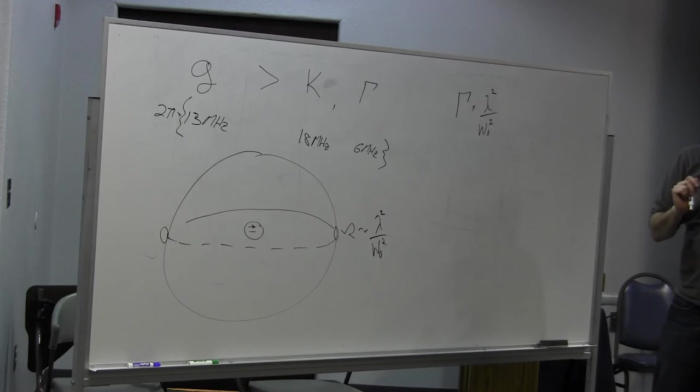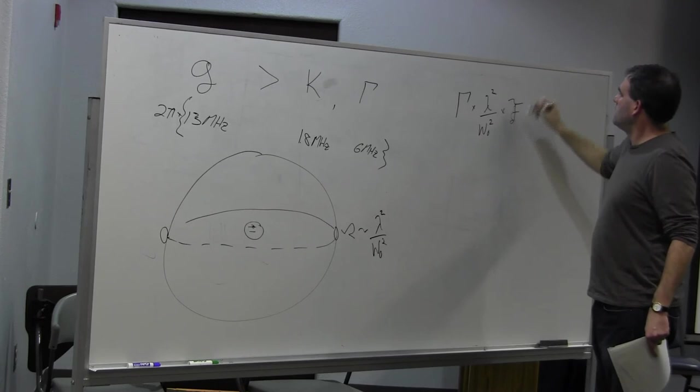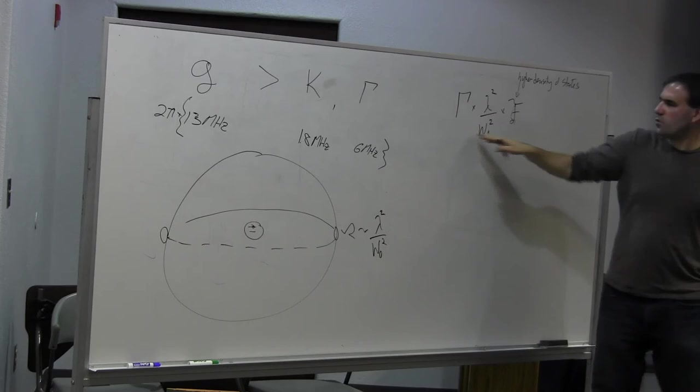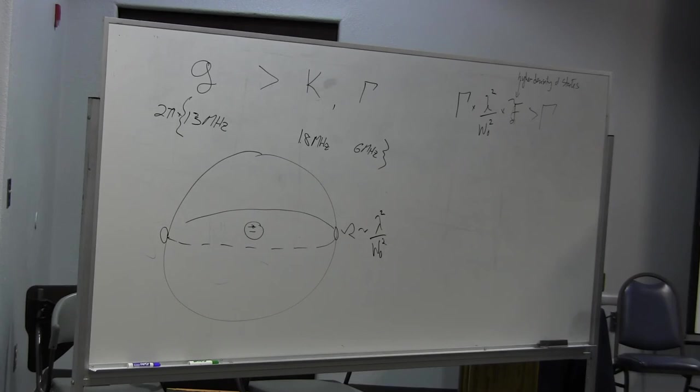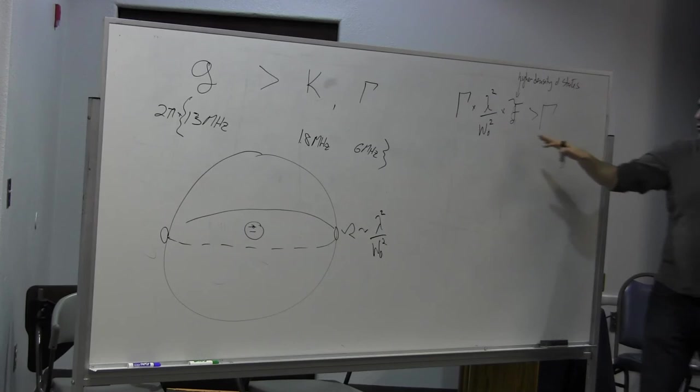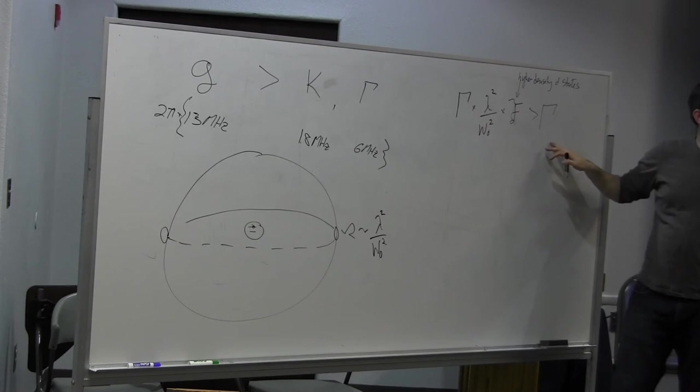But also the density of electromagnetic states in the cavity is enhanced, because we have a cavity where all the modes are bunched up by the finesse. So multiply by the finesse. The strong coupling condition is one where this thing is greater than the spontaneous emission rate. And it'll turn out that this condition, that g is greater than these guys, or rather that it's greater than the geometric mean of them, turns out to guarantee this condition. That the atom would more likely now radiate its photon into the cavity than radiate it out into free space.